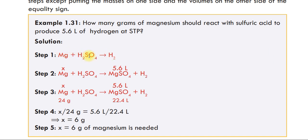Magnesium plus sulfuric acid gives magnesium sulfate plus hydrogen. The balanced chemical equation is: Mg + H₂SO₄ → MgSO₄ + H₂.